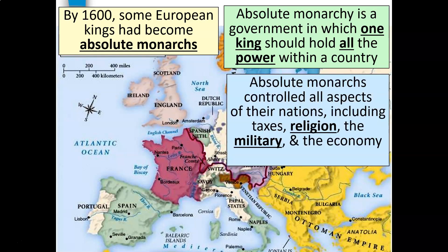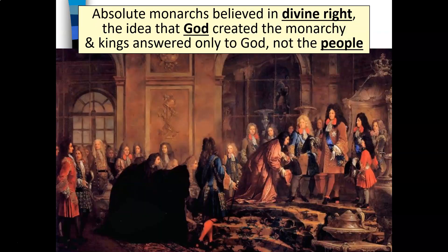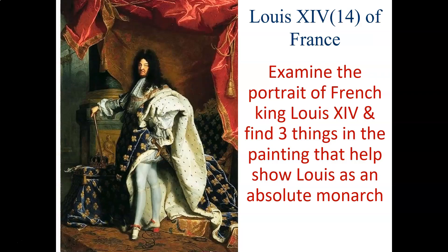Absolute monarchy is a form of government in which one king holds all the power within a country. Absolute monarchs were able to control all aspects of their nations, including collecting taxes, dictating what religion would be practiced, controlling the military, and controlling the economy. Absolute monarchs also believed in the concept of divine right — the idea that God created the monarchy and kings answer only to God and not the people.